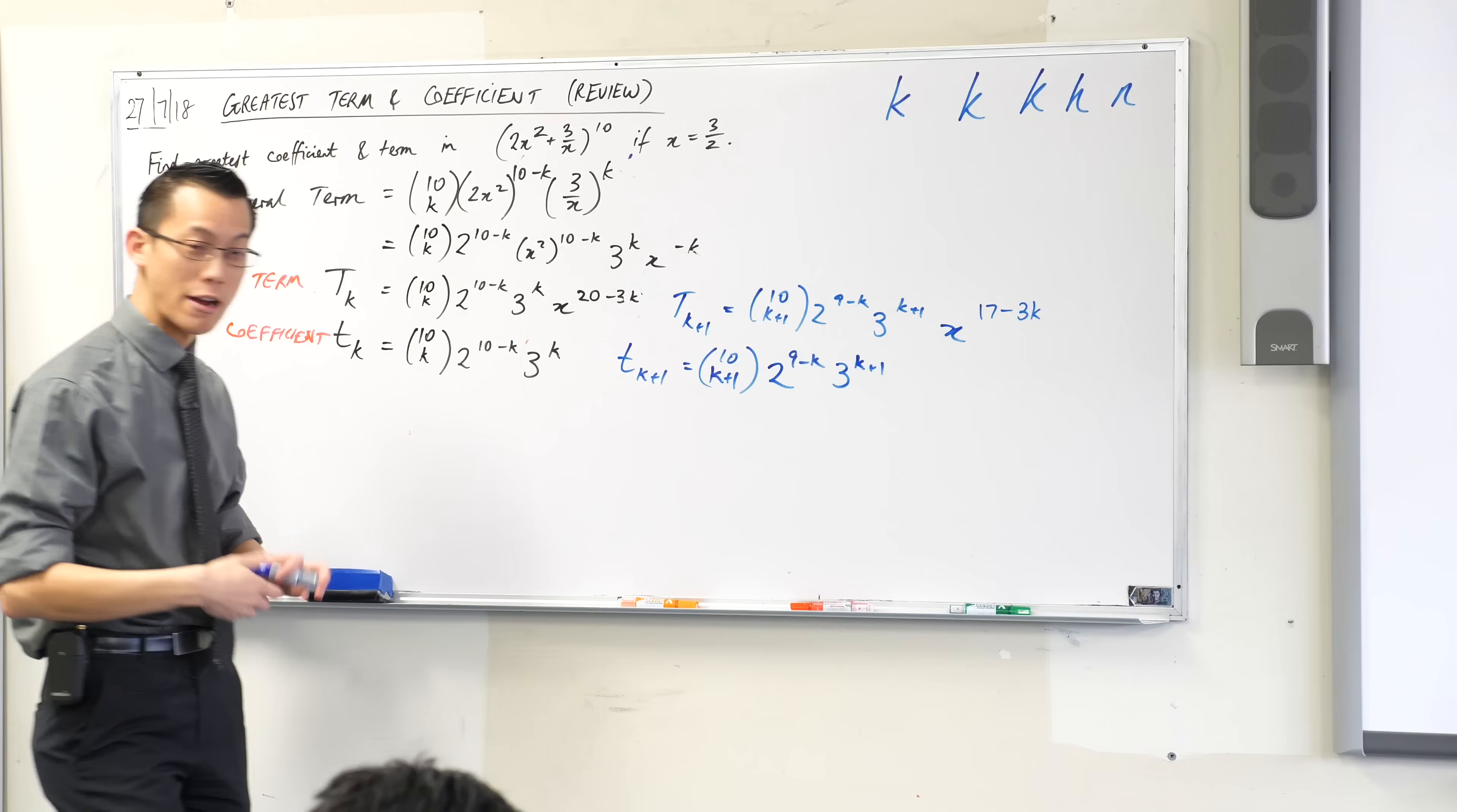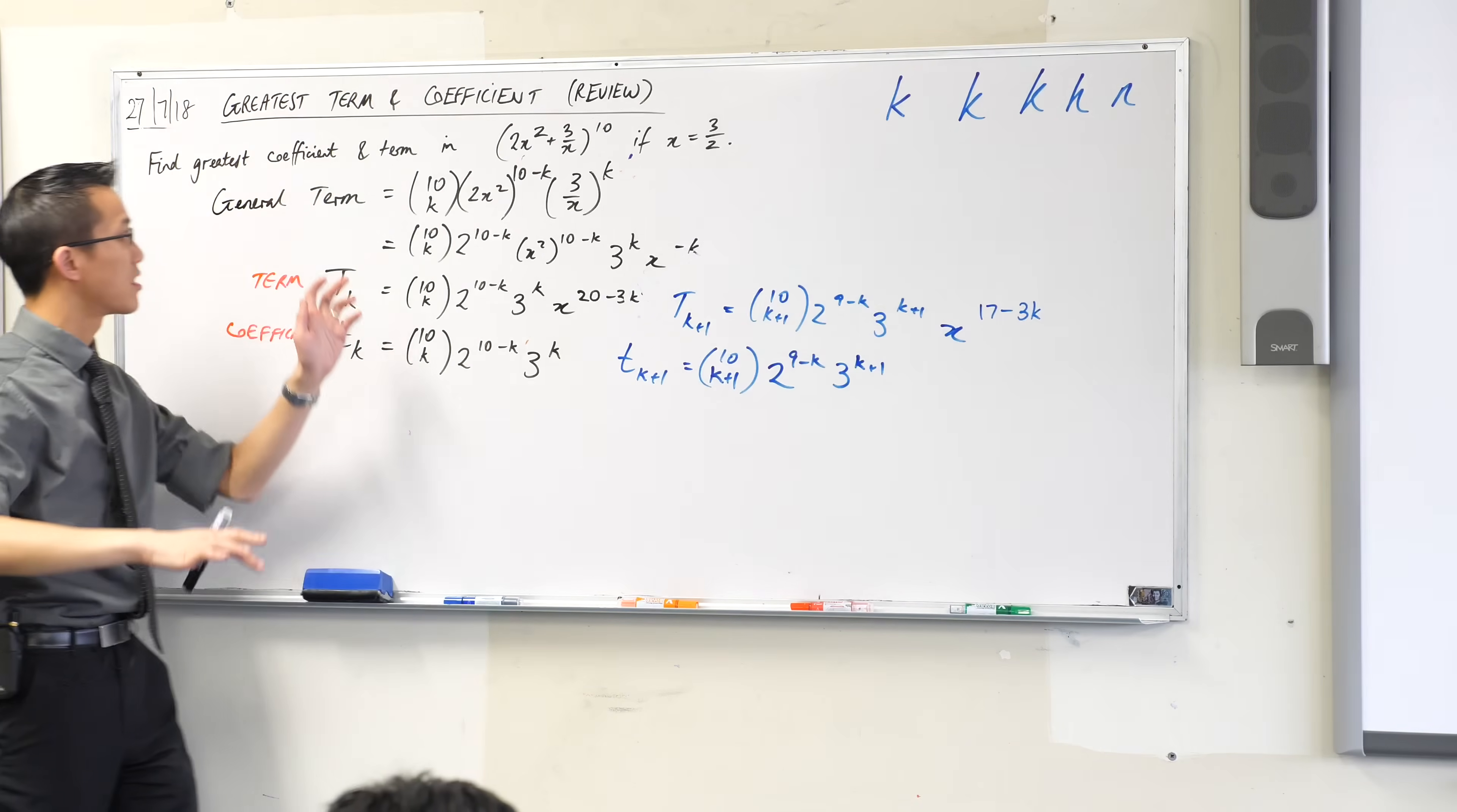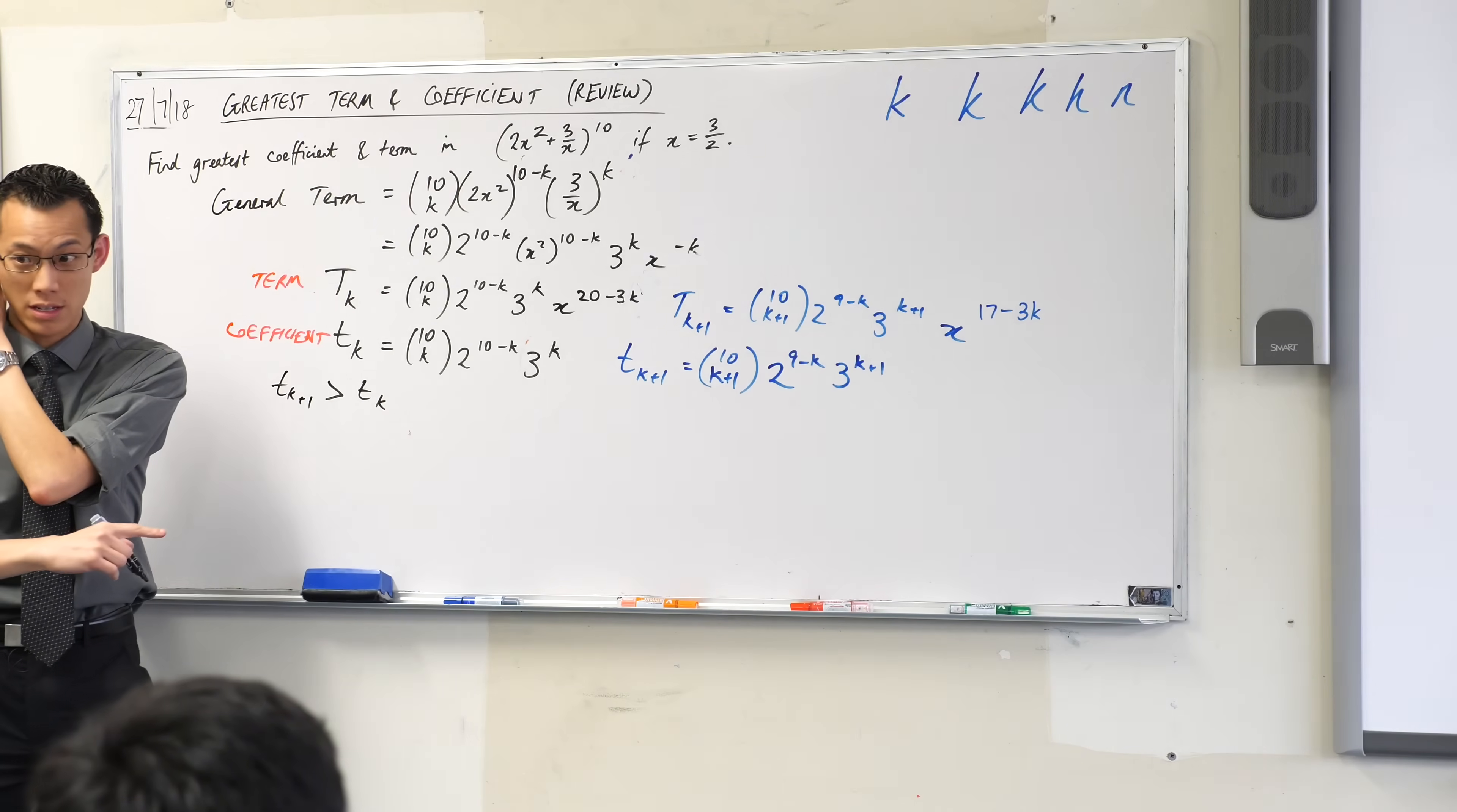So when we get to working out the greatest term, we're going to use that guy over there instead of this guy, we'll compare those two. Now to remind you, what we want is to say, to find the greatest coefficient, the coefficients will grow and grow and grow until some magic spot, the spot that I'm interested in, and then they will decrease. So I want to know when is that growing time. When is it that the next coefficient continues being bigger than the previous coefficient. This is what we're trying to do.